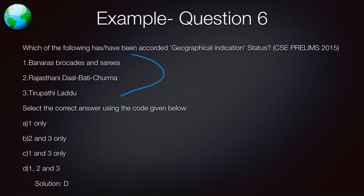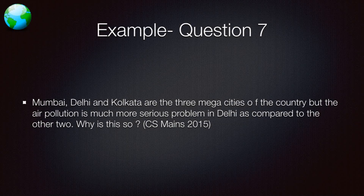For mains, a question asks: Mumbai, Delhi, and Kolkata are three mega cities, but air pollution is much more serious in Delhi compared to the other two — why? You cannot refute the examiner's premise, so you need to know the reasons: certain industries, climate conditions, why the problem is so severe in Delhi but not so much in Mumbai or Kolkata. Perhaps the sea being close to Mumbai and Kolkata plays a role. You need to analyze it and give four or five supporting arguments.